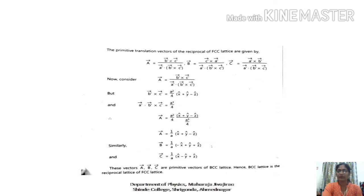During our previous lecture we have seen that the right-hand side of these equations resembles the value of a', b', c', that is the primitive translational vectors in the BCC lattice, and the right-hand side is nothing but the reciprocal of the FCC lattice. Therefore, one can say that the reciprocal of the FCC lattice gives us the BCC lattice. Thank you.